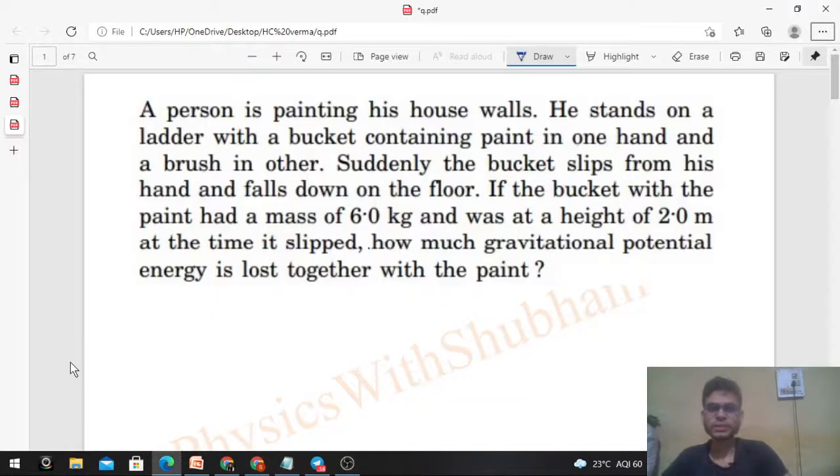Okay, hi everyone. So today let's discuss this problem. It says a person is painting his house walls. He stands on a ladder with a bucket containing paint in one hand and a brush in the other. Suddenly the bucket slips from his hand and falls down on the floor. If the bucket with the paint had a mass of 6 kilogram and was at a height of 2 meter at the time it slipped, how much gravitational potential energy is lost together with the paint?